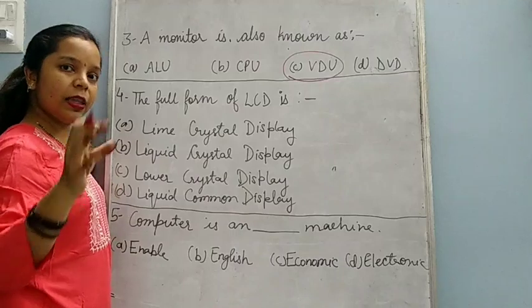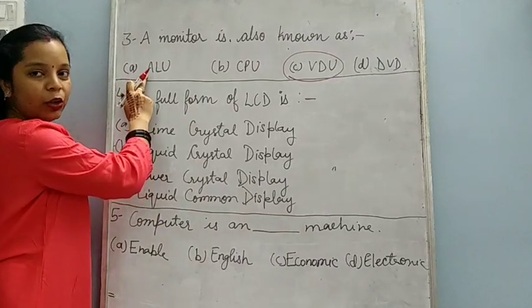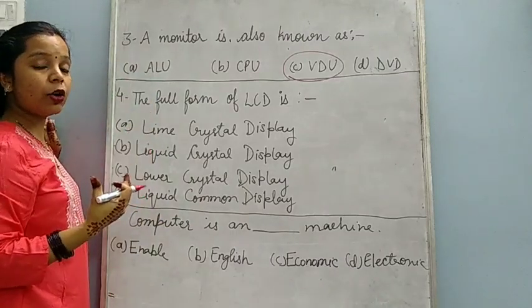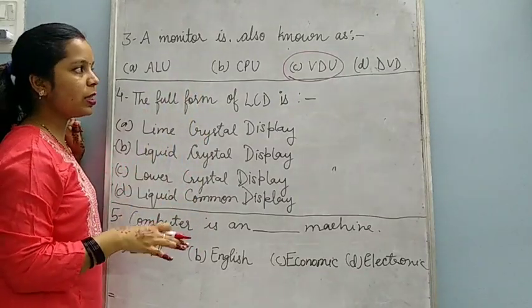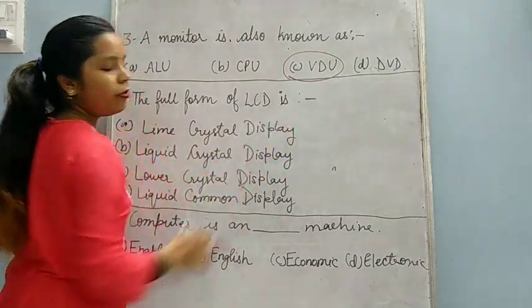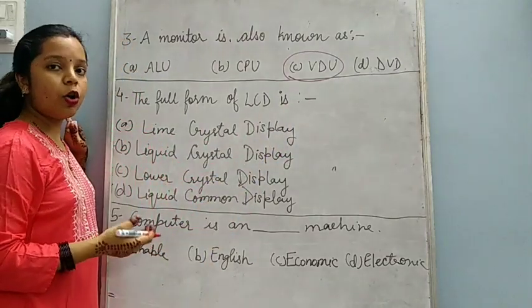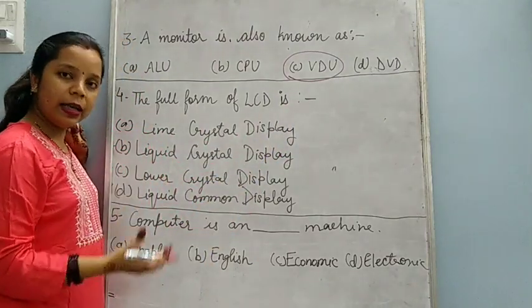All of the full forms can come in the exam. ALU full form is Arithmetic Logical Unit. CPU full form is Central Processing Unit. DVD full form is Digital Versatile Disk.